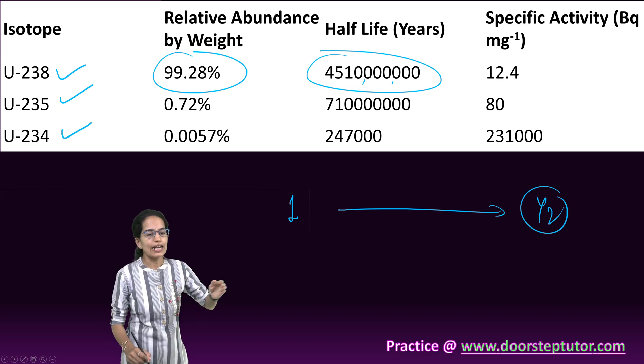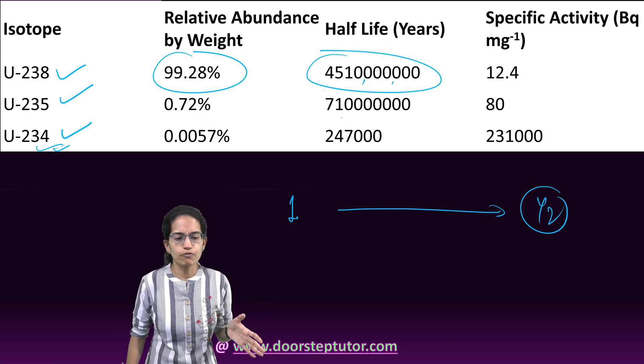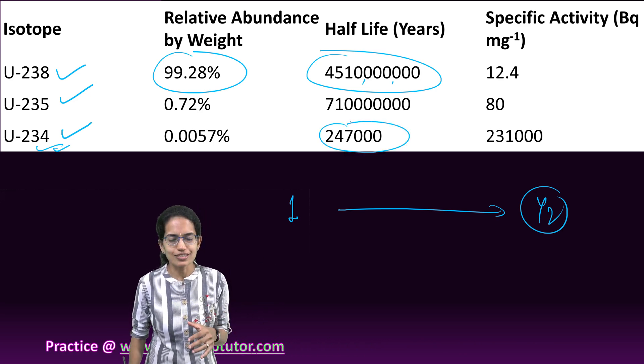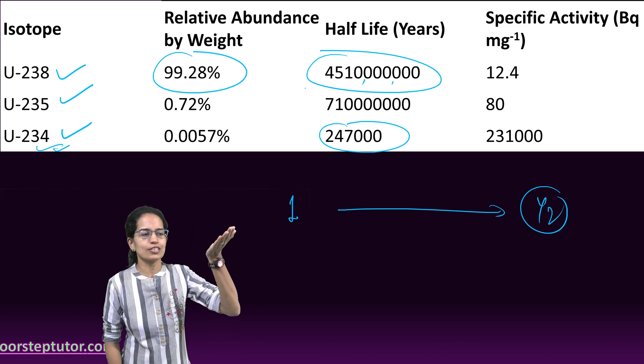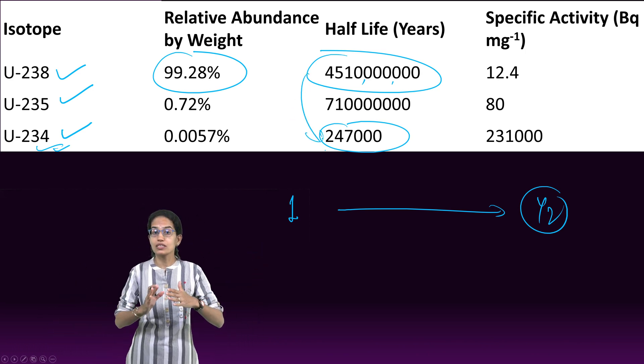The half-life for the third isotope, uranium-234, is relatively less in comparison to U-238. But in absolute terms, this is still a very prolonged period of time.